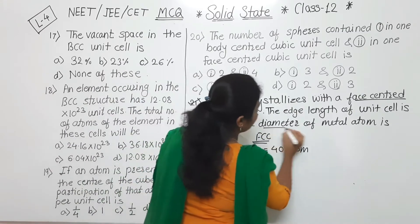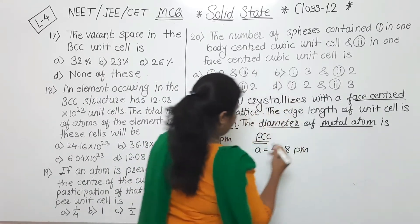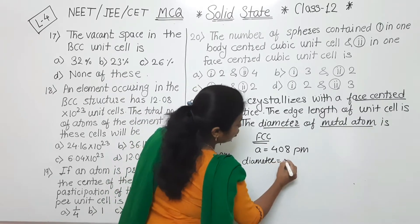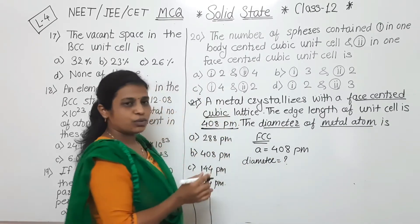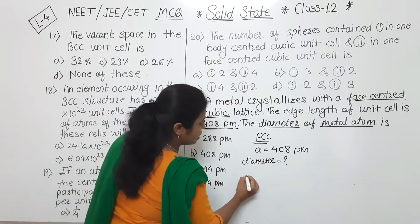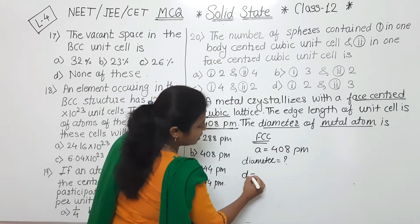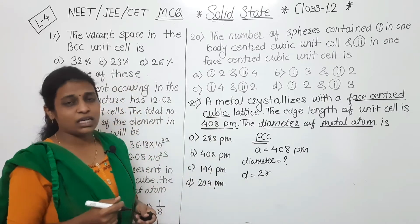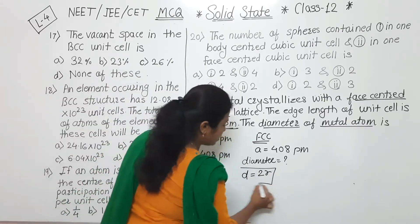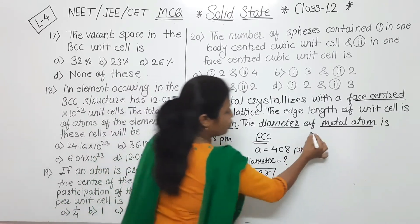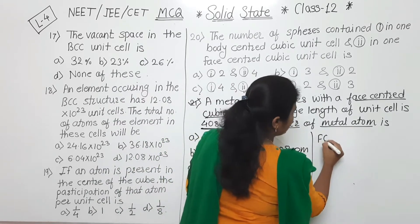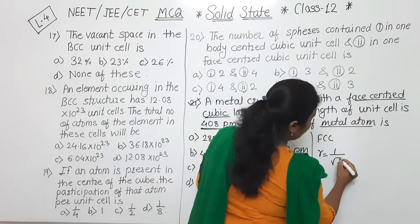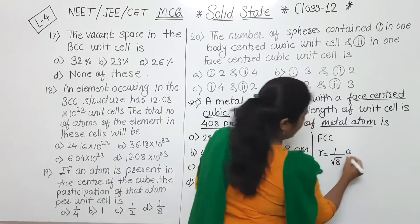So what we have to find out? The diameter of the metal atom. To find the diameter, since diameter D is equal to 2R, it is always double the radius. So first we have to calculate the radius. For FCC, radius R is equal to 1 over root 8, multiplied by A.